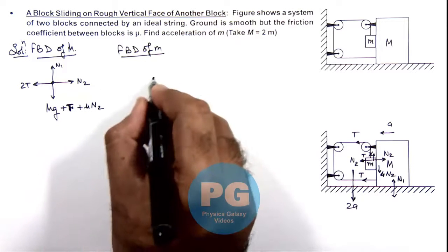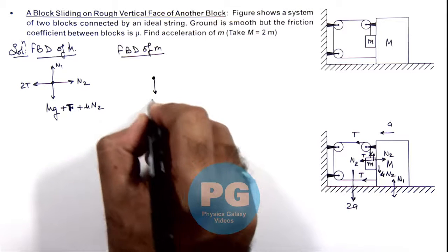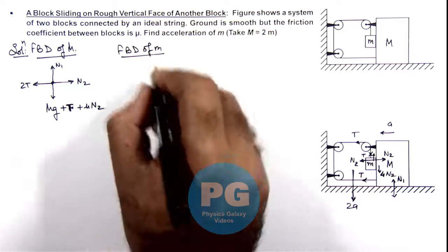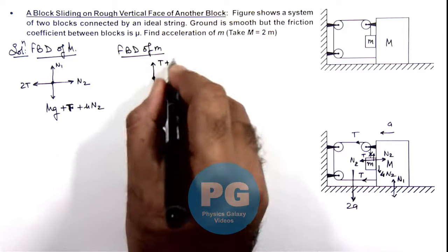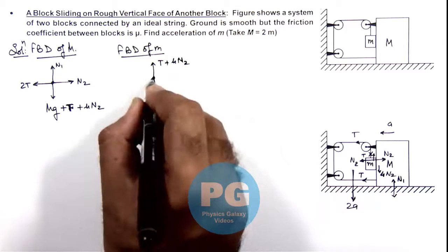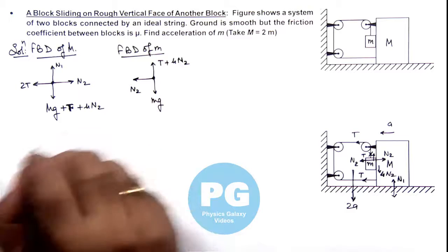For free body diagram of small m, it is experiencing mg in downward direction, T in upward direction plus mu N2 also. And a normal reaction N2 is acting on it toward left.